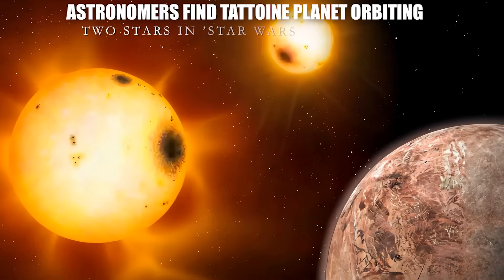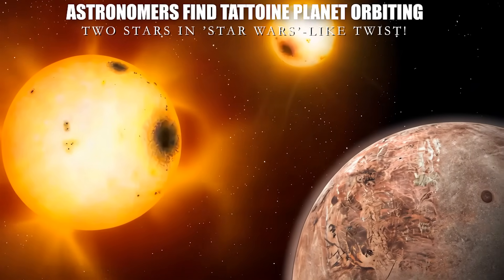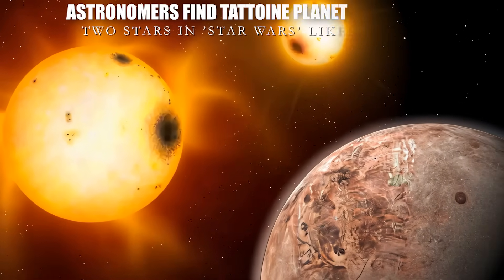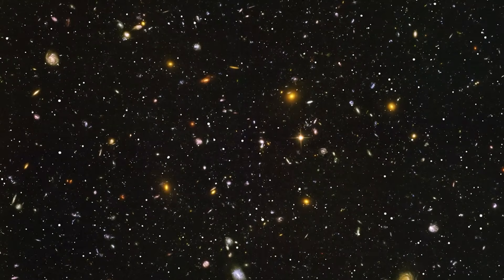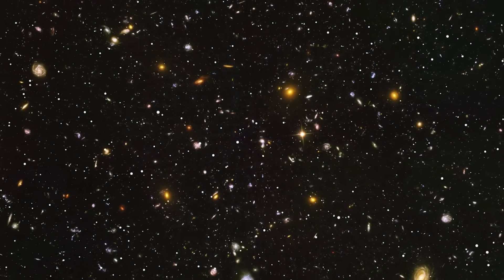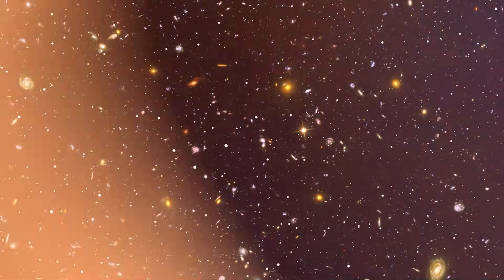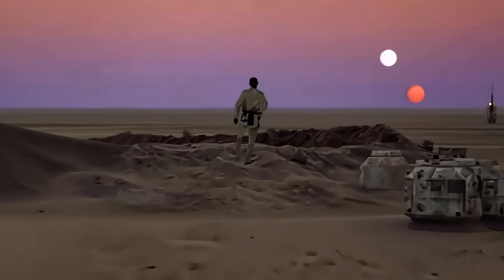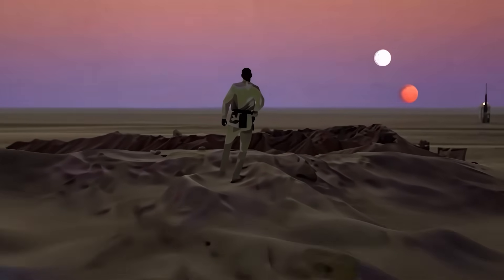Astronomers find Tatooine planet orbiting two stars in Star Wars-like twist. The universe just got a lot more Star Wars than we ever expected. Remember that iconic scene where Luke Skywalker stares at the twin sunset on Tatooine?